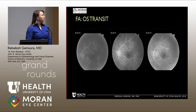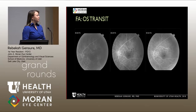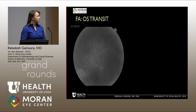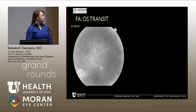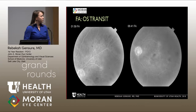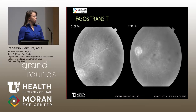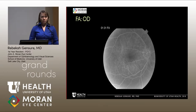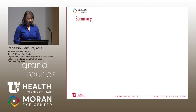The fluorescein angiogram showed a normal arm-to-retina time. As we progress through the frames, there are areas of reduced perfusion infratemporally and supranasally in the early phases. The intraretinal hemorrhages appear as hypo-autofluorescent areas, with some leakage in the superior macula. The right eye was essentially unremarkable.